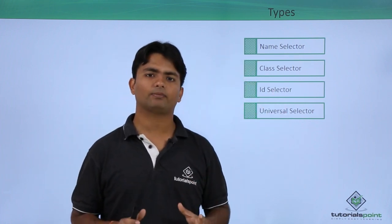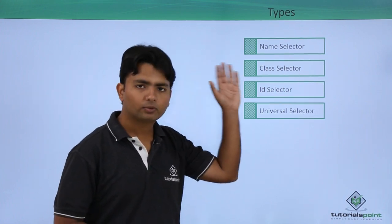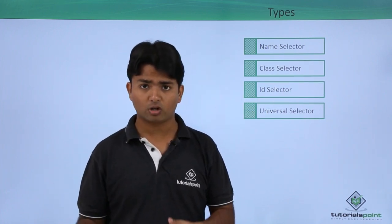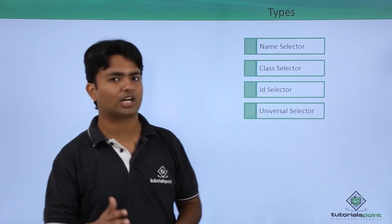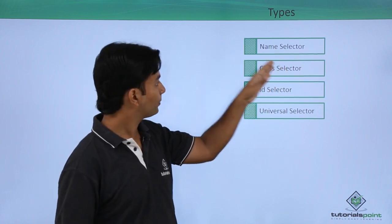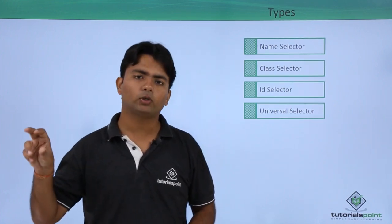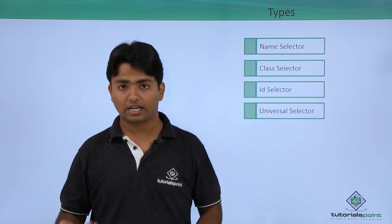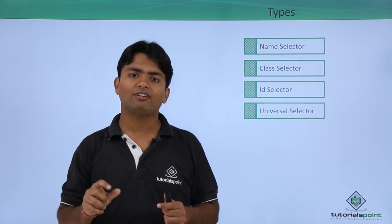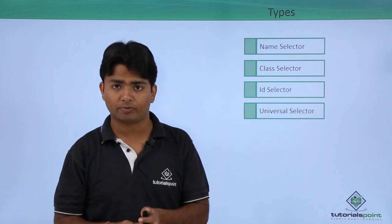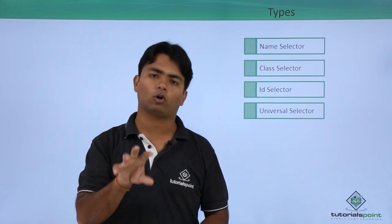The name selector is where you pass the name of a particular tag to apply styles — for example, using h1 or h2. The class selector uses a dot prefix and contains a list of styles. When you want to apply that set of styles to a particular element in a document, you use the class attribute by passing the class name.